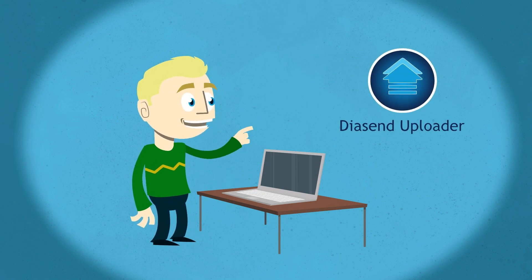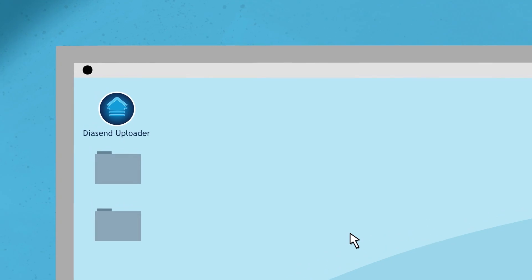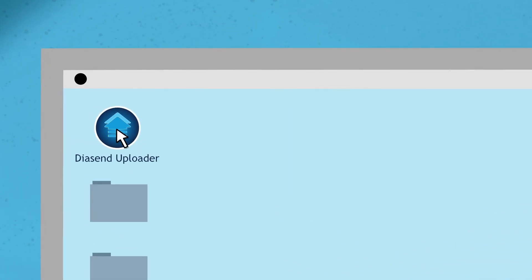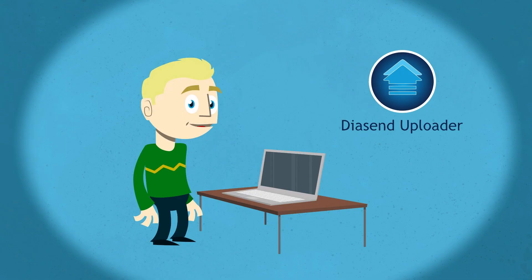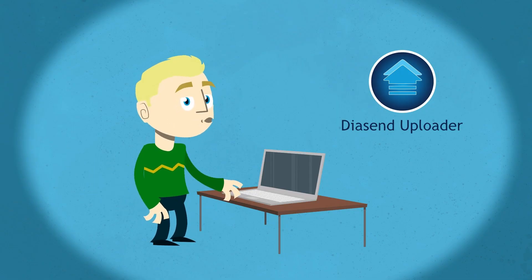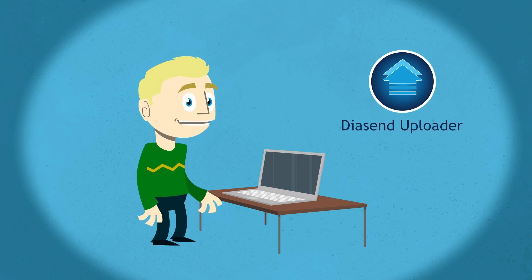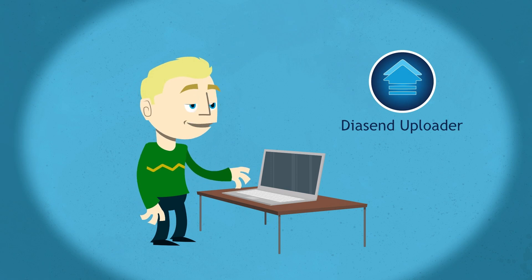Go to your desktop to find the shortcut icon for Uploader. If a shortcut has not been automatically created, please search for recent downloads or an application folder — this varies depending on which operating system you use. Please note that you should not start up any software provided by the meter company, as this will interrupt the upload.